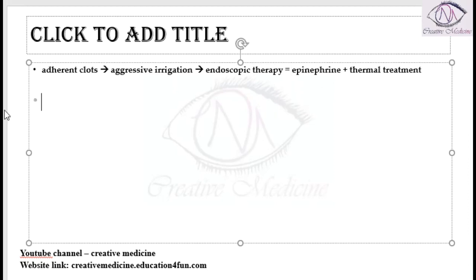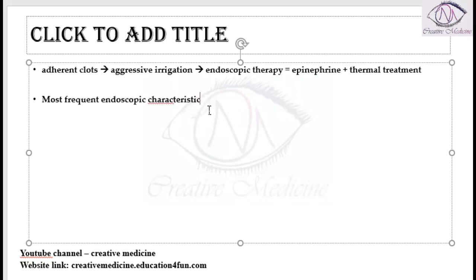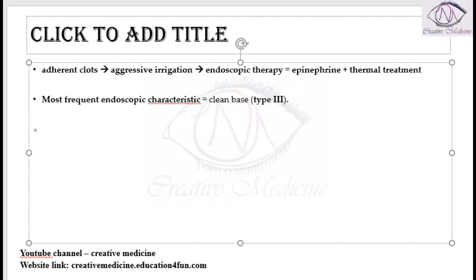On endoscopy, the most frequent characteristic of bleeding peptic ulcers is the presence of a clean base, which is Stage 3. Clean base is the most frequent type of endoscopic characteristic.